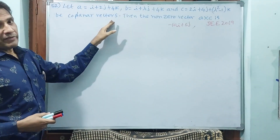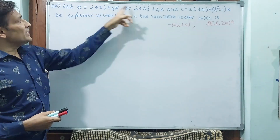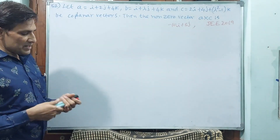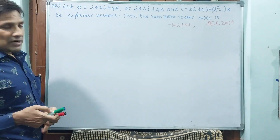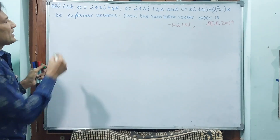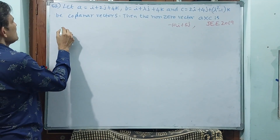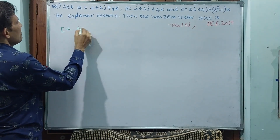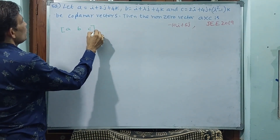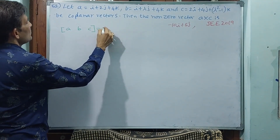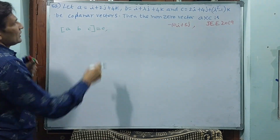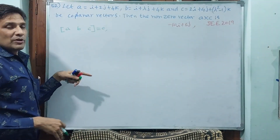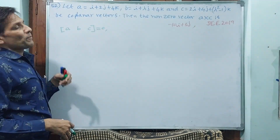A, B, C are coplanar vectors. What is the formula for coplanarity? A, B, C should be equal to 0 — that means if you make a determinant form, the determinant should become 0.